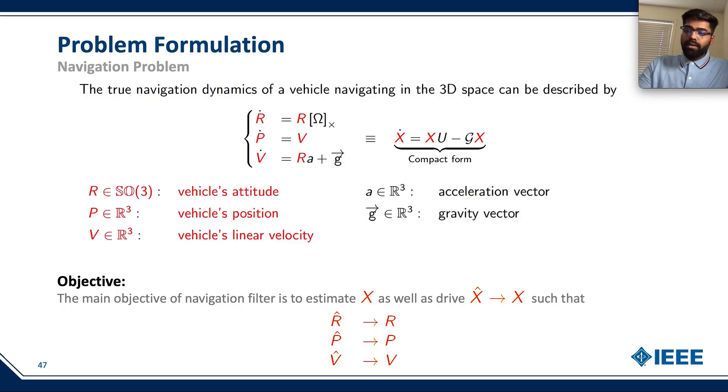Here we need R hat, or the estimate of the vehicle's orientation, to be as close as possible to the true orientation of the vehicle. In the same way, we need the estimate of our vehicle's position, which is P hat, and the estimate of our vehicle's linear velocity, which is V hat, to be very close to the true position P and the true linear velocity V, respectively.